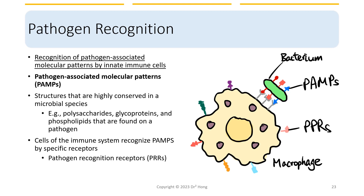The recognition mechanisms of innate immune cells are fixed, so they are somewhat limited. However, they can still recognize a range of pathogen-associated molecules. We call them pathogen-associated molecular patterns, abbreviated as PAMPs. These structures are usually highly conserved in microbial species, such as polysaccharides, glycoproteins, and phospholipids found on pathogens. Innate immune cells, for example macrophages, carry an array of receptors that can recognize these PAMPs. These receptors are called pathogen recognition receptors, or PRRs, and we will look at these specific receptors in greater detail in later lectures.